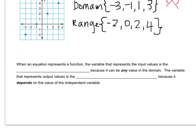When an equation represents a function, the variable that represents the input values is called the independent variable because it can be any value in the domain. It's totally independent. The variable that represents the output values is called the dependent variable because it depends on what you input.